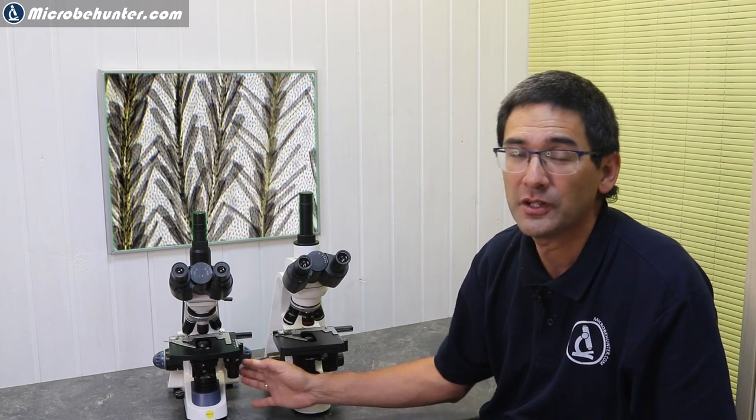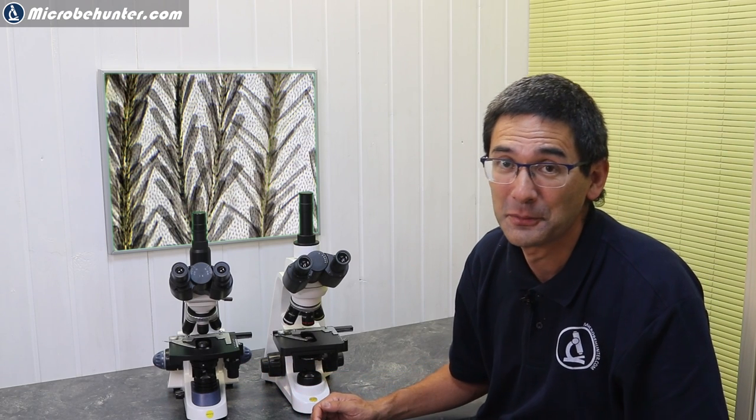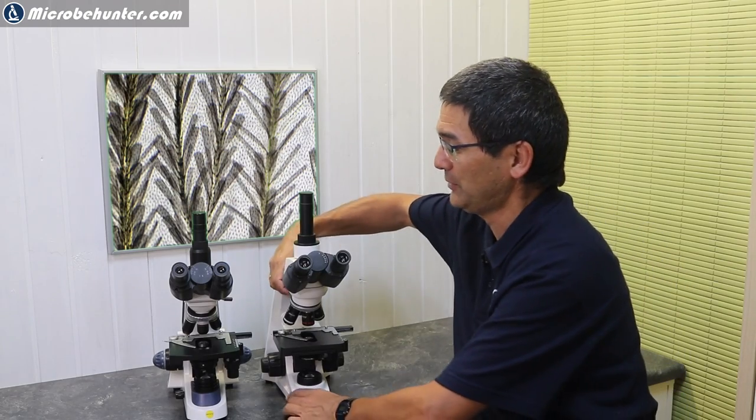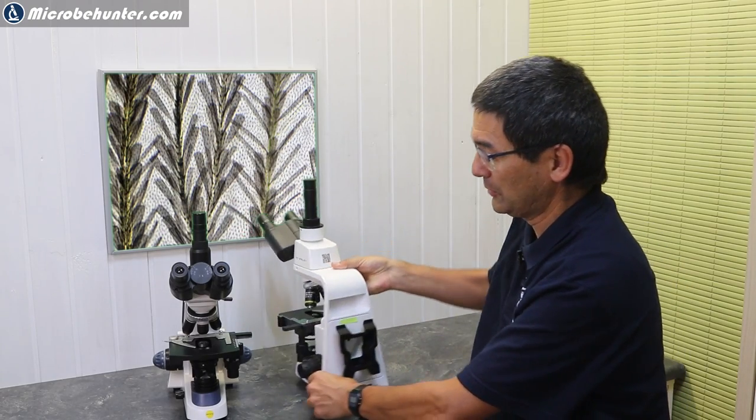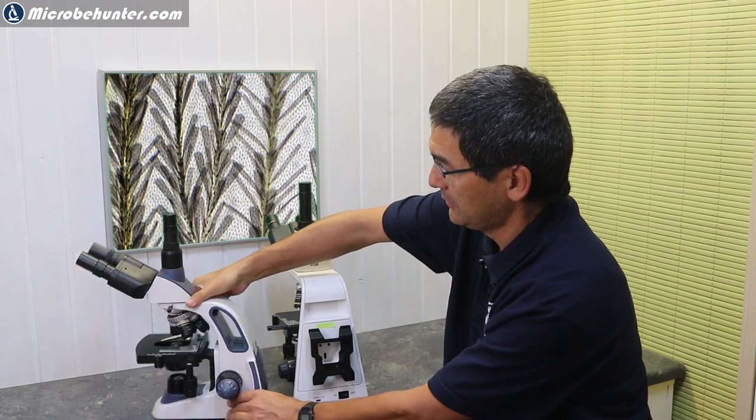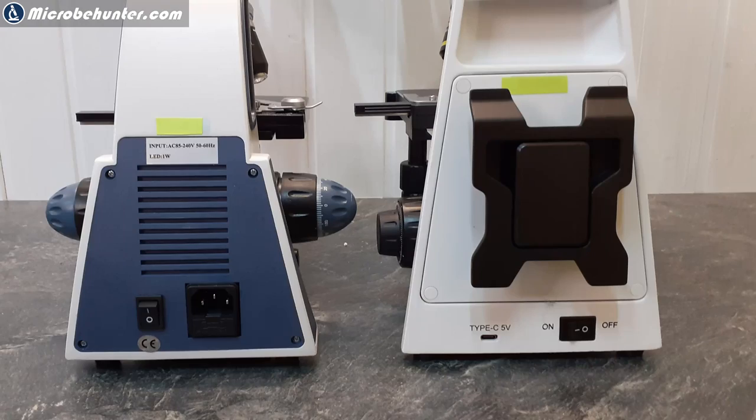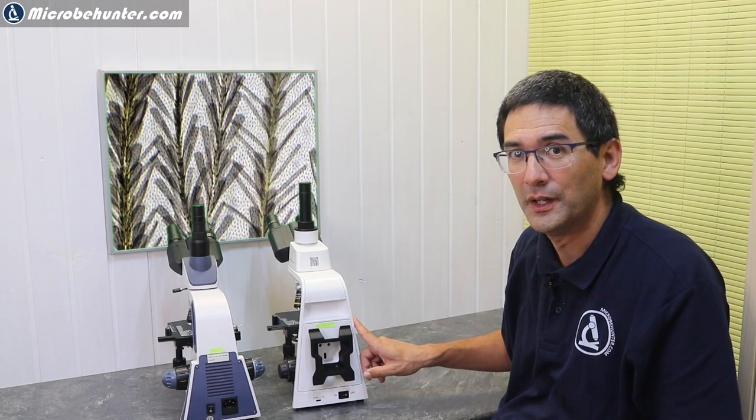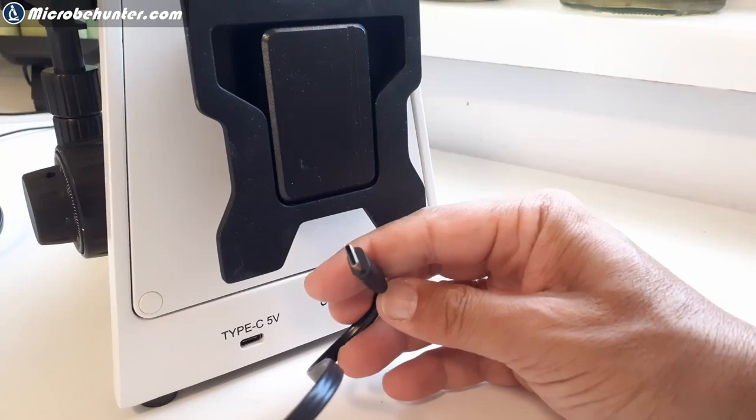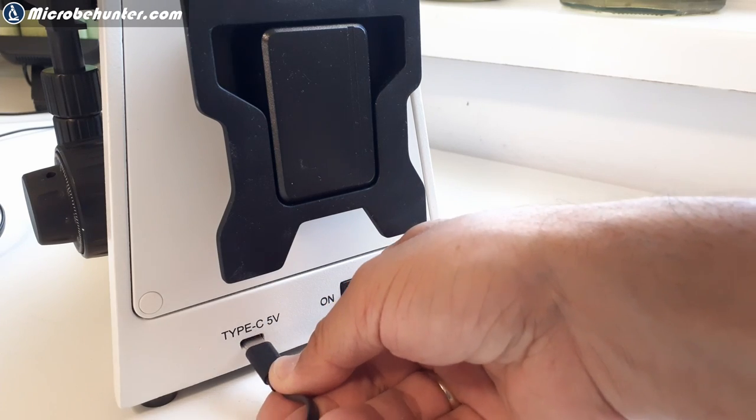Also concerning the mechanical stage, it actually looks pretty similar, both of them. The big difference, however, is the way that those microscopes are powered. When you turn the microscopes around you can actually see that the 380T here is directly powered from a power source, and the Stellar One has a USB-C connector here.